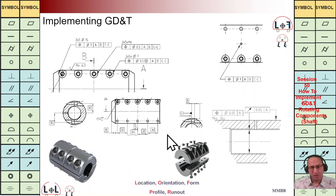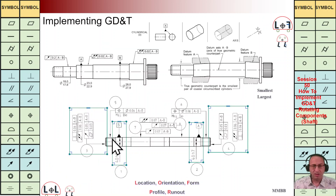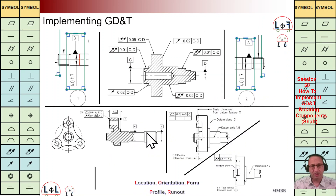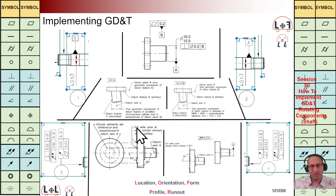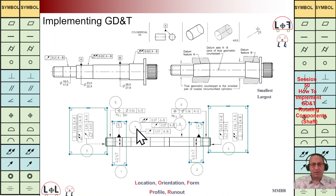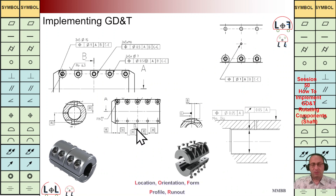Nothing more to add for this shaft coupling. In the coming session I'm going to talk about the second shaft on the left-hand side — what GD&T is needed for that — and we'll go ahead step by step. Thank you for today, I hope you enjoyed it. See you next time.